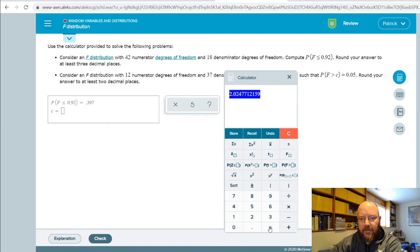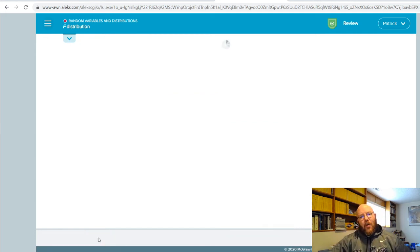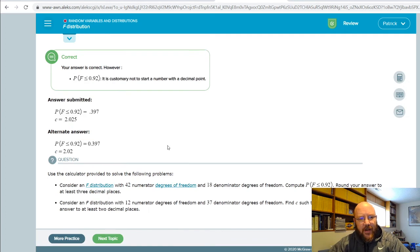There we go. And that's our value, 2.025. Go ahead and check that, and there we go. All right, so again, don't start it with the decimal point, blah blah blah.